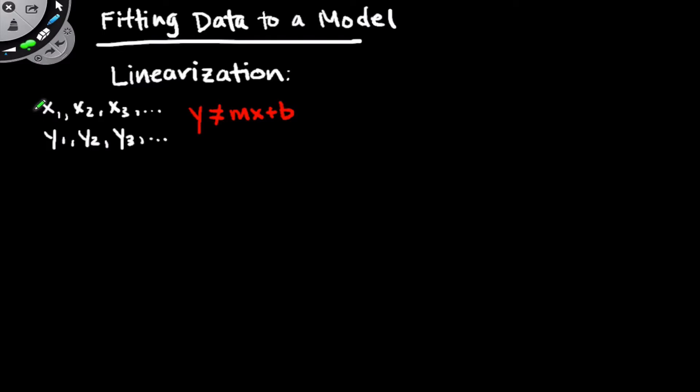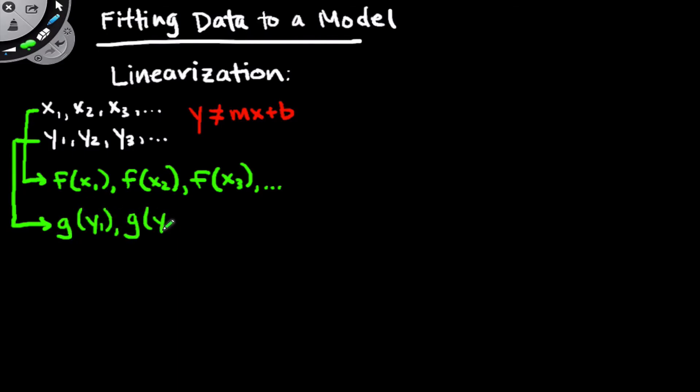And the solution is to transform x and y such that we end up with a linear model. So let's see how that works. Well, imagine we suspected we knew what the form of the relationship was between x and y. And we transformed the x's using some function f of x. So in other words, we started with x1, x2, x3, and we applied the function f to each of those values to generate a new set of values, f of x1, f of x2, f of x3, etc. Now imagine we did something similar to y but using, potentially, a different function g. So we applied the function g to all of the dependent variable y values. So we go from y1, y2, y3 to g of y1, g of y2, and g of y3, etc.